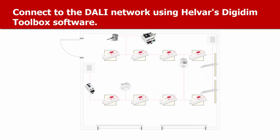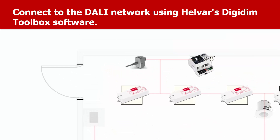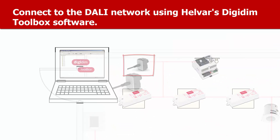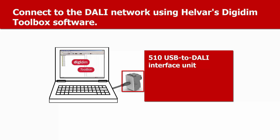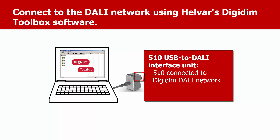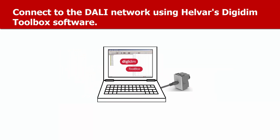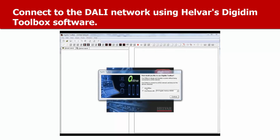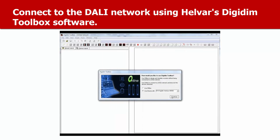What we're going to demonstrate now is connecting to the DALI network using Helvar's Digidim Toolbox software on a Windows PC, and using Toolbox to configure the lighting controls. Note that you can still make some adjustments to the lighting scenes even without the PC. We're going to use a Helvar 510 USB to DALI interface to connect our PC to the DALI network, but other interfaces are available. Connect the PC via USB cable to the interface. Open the Toolbox software, select the 510 interface, and click Continue.